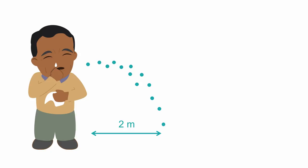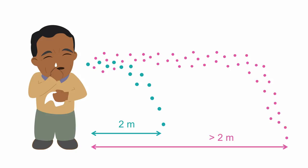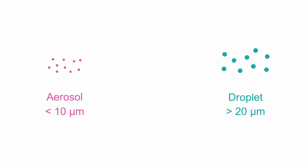Aerosol, on the other hand, is made up of fine particles under 10 microns in diameter, and they can travel for many meters before they fall to the ground or some other surface. So an aerosol is below 10 microns and can travel far in the air. Droplets are larger than 20 microns and usually succumb to gravity and fall to the ground.